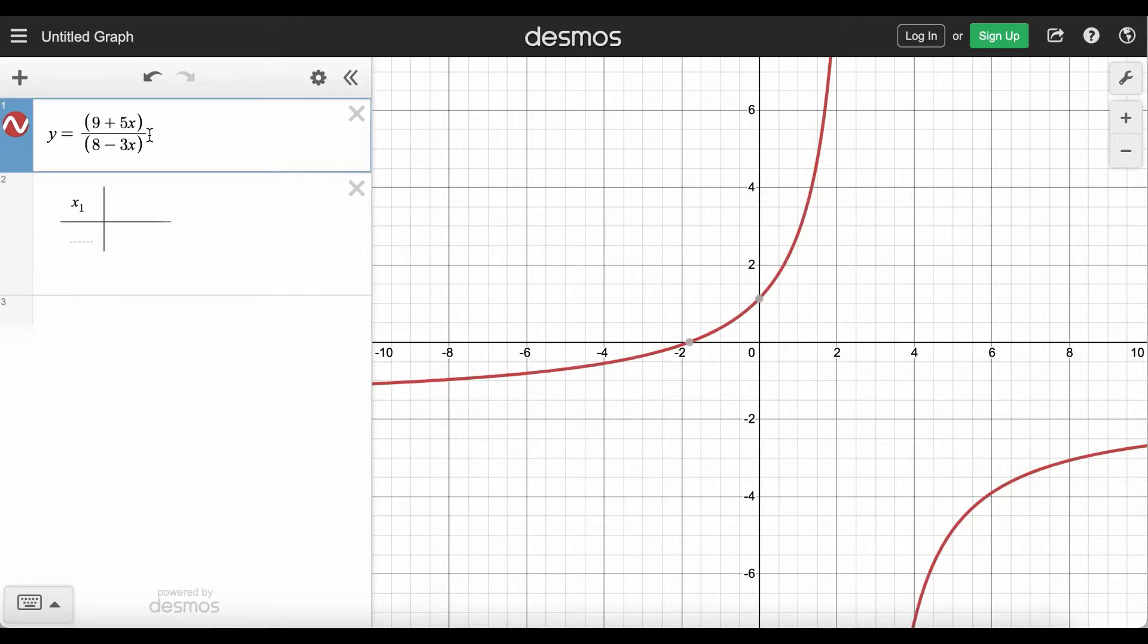Then I'll come up to our function and the first line, highlight only the expression, in this case the rational function expression, and do not highlight the y equals. When I click either command C or control C to copy it, click in the header for the output column and do control V or command V to paste.